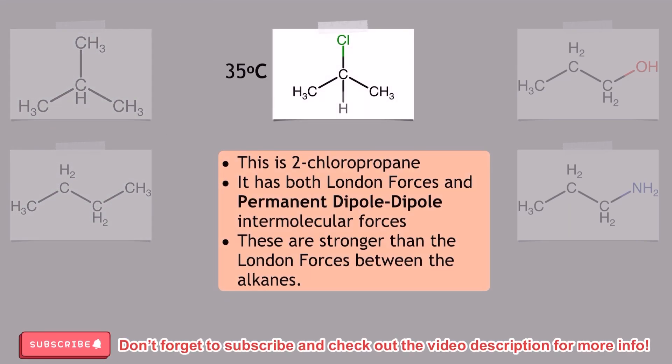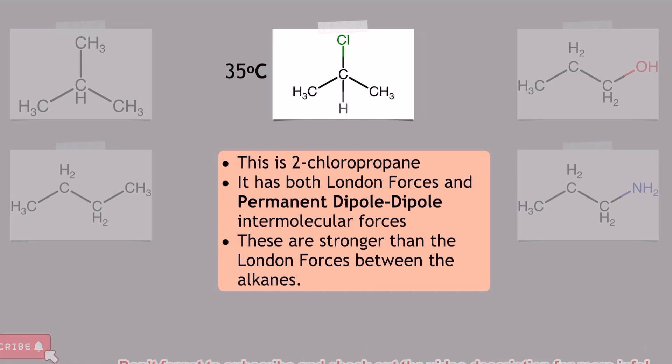Moving over to the middle molecule here and you'll see we have 2-chloropropane. Now it has London forces just like the two alkanes we were looking at a moment ago, but that boiling point is much higher at 35 degrees C and that's because it's also got permanent dipole-dipole as its strongest type of intermolecular force.